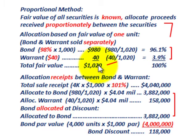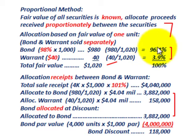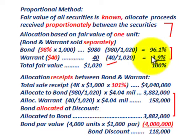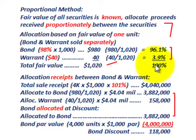The fractional amount allocated to the bond is $980 divided by the total fair value of $1,020, giving us 96.1% allocated to the bond. The warrant's fractional amount is $40 divided by $1,020, which is 3.9%. So we've allocated a total of 100%: 96.1% to the bond and 3.9% to the warrant, based on their separate selling prices.